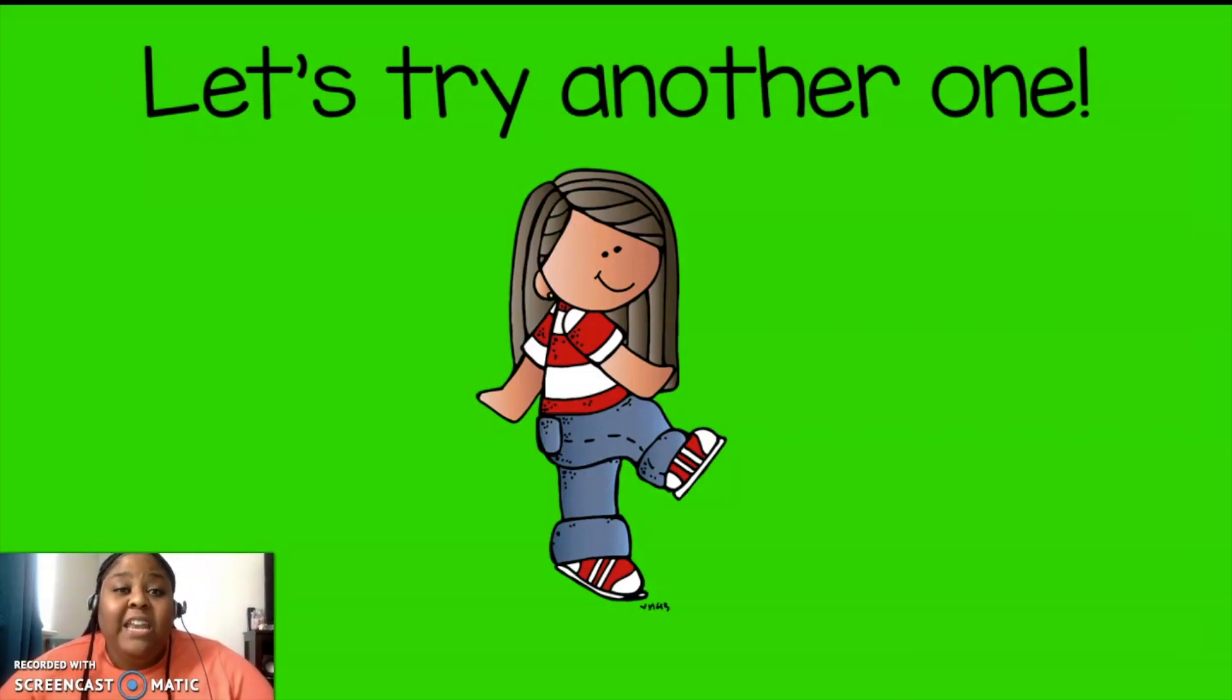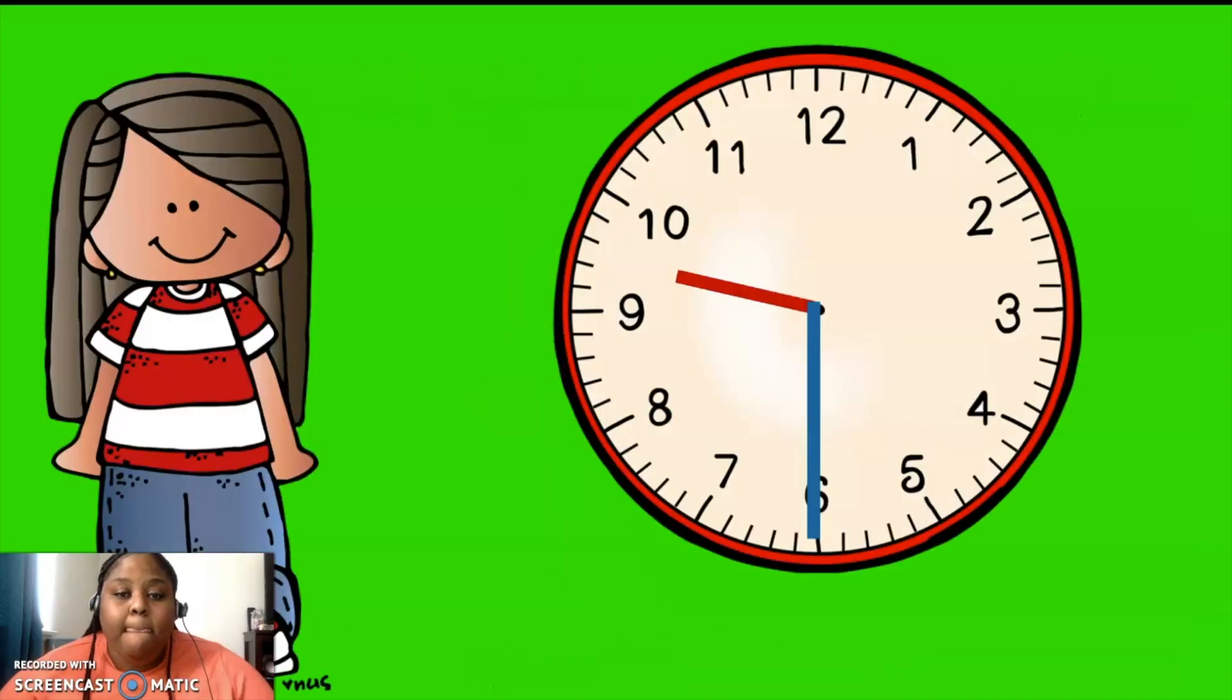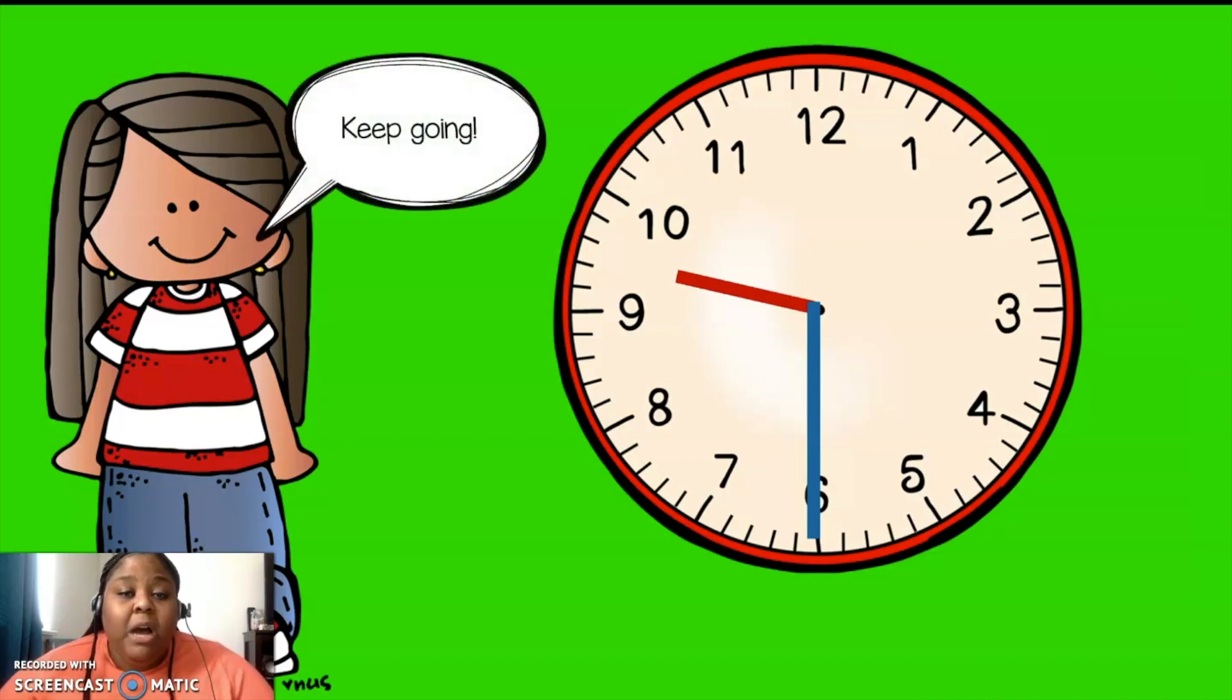Let's try another one. Erase your whiteboards. Let's look at the clock. Look at the hour hand that's in between the 9 and the 10. Let's look at the minute hand that's pointing at the 6. Keep going. It is 9:30. Again, kings and queens. Great way of showing that greatness.